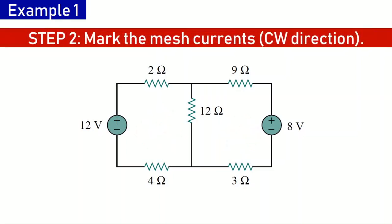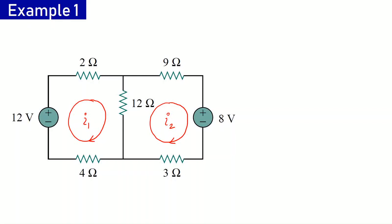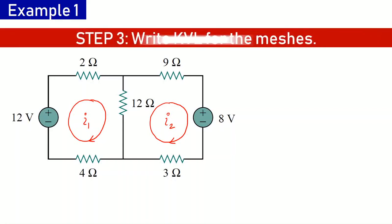Once you identify the meshes, the second step is to mark the mesh currents. Mesh currents can be marked either in clockwise or anti-clockwise direction, but for convention we will always take mesh currents in a clockwise direction. I have these two meshes — mesh 1 and mesh 2 — and I am marking the mesh currents in clockwise direction. Once we have marked the mesh currents, we need to write the KVL equations for these two meshes to obtain the values of i1 and i2.